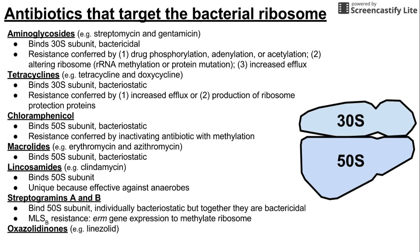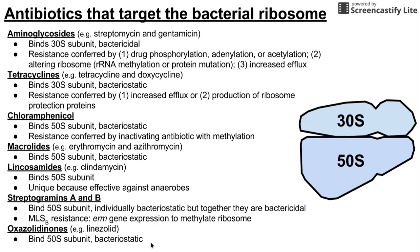The last class is the oxazolidinones, with linezolid as an example. This is a relatively new antibiotic class that also binds to the 50S subunit and is bacteriostatic. To summarize: aminoglycosides and tetracyclines bind the 30S subunit, while chloramphenicols, macrolides, lincosamides, streptogramins, and oxazolidinones all bind the 50S subunit. Thanks for listening.